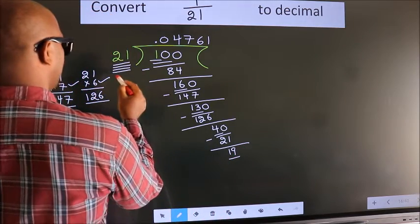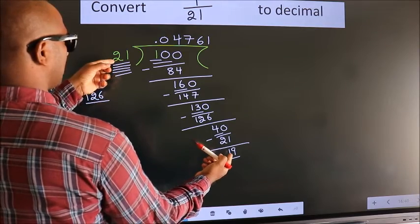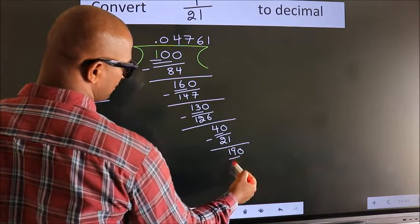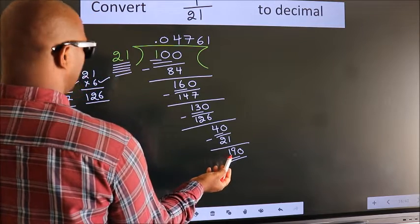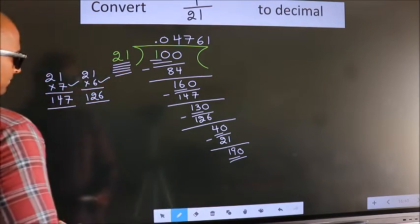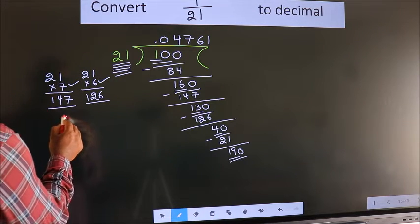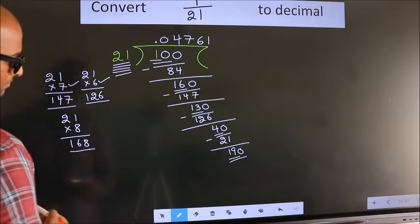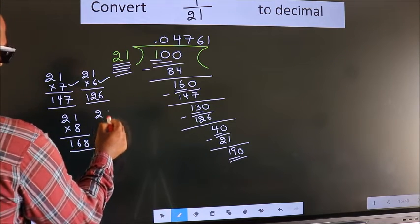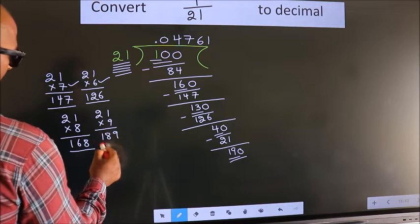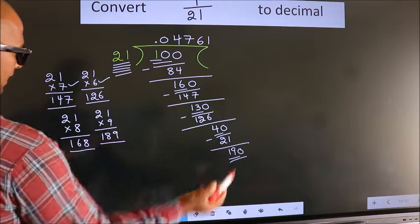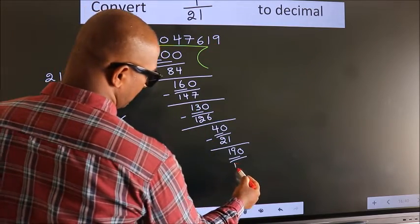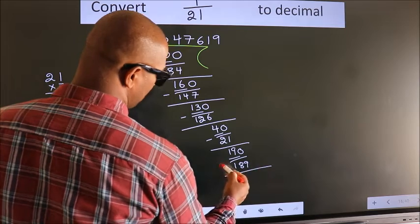Here we have 19, here 21. 19 is smaller than 21, and we already have the decimal, so we can directly take 0 — so 190. A number close to 190 in the 21 table: let us go with 9. 9 times 1 is 9, 9 times 2 is 18 — so 189, which is close to 190. We go with 9, so 21 nines is 189. Now we subtract and we get 1.